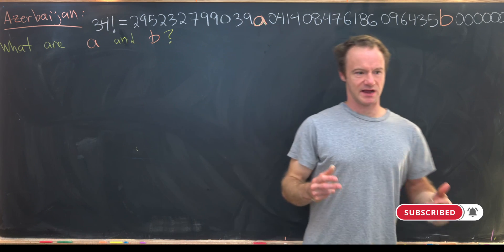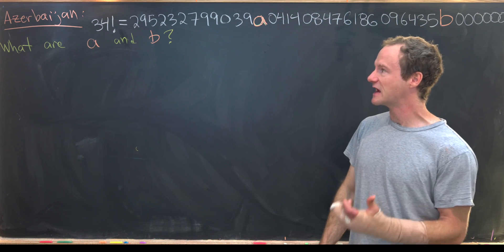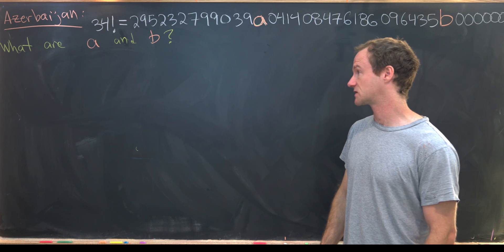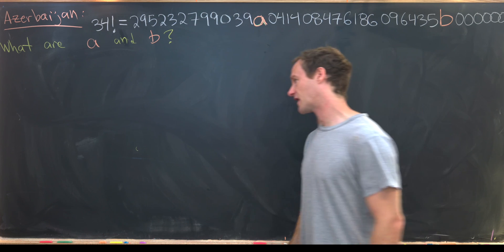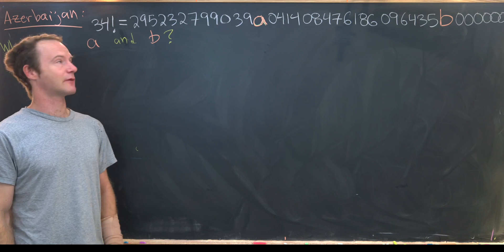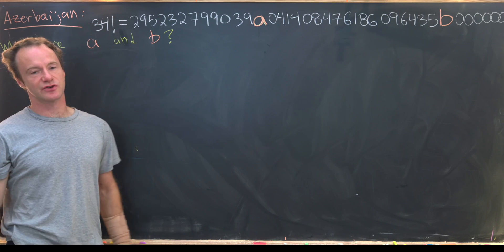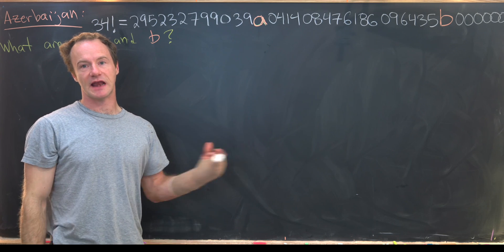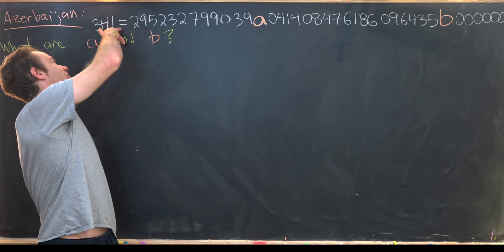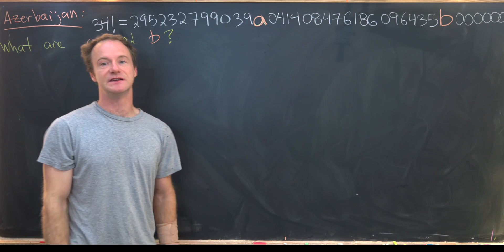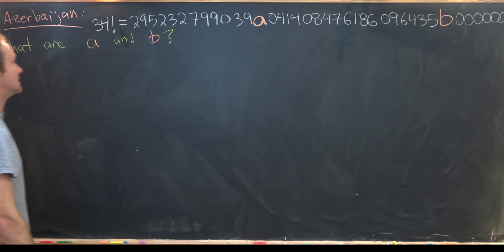This may seem like super impossible, but you can actually do it pretty easily with some divisibility tricks. So the first thing that I want to start with is since 34 is bigger than nine, and it's bigger than 11, then 34 factorial is most definitely divisible by nine and 11.